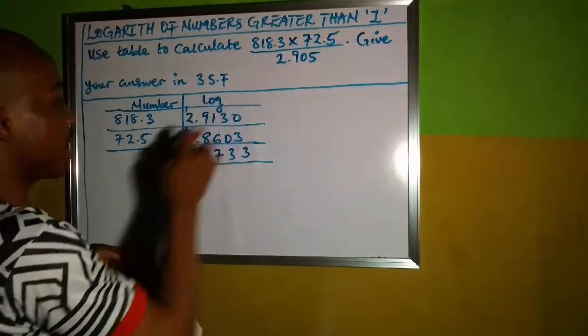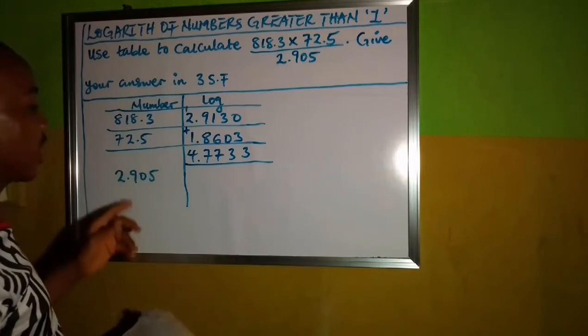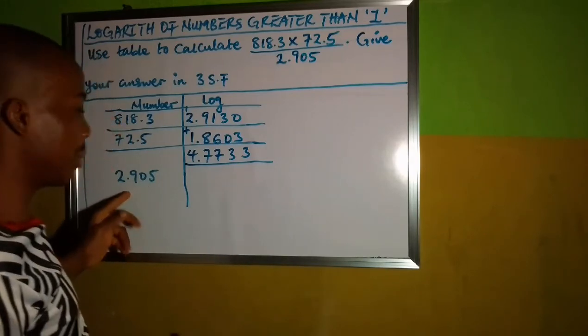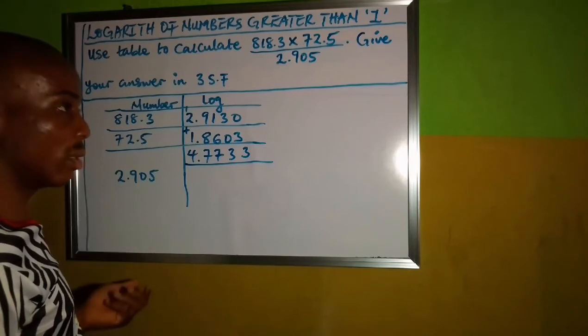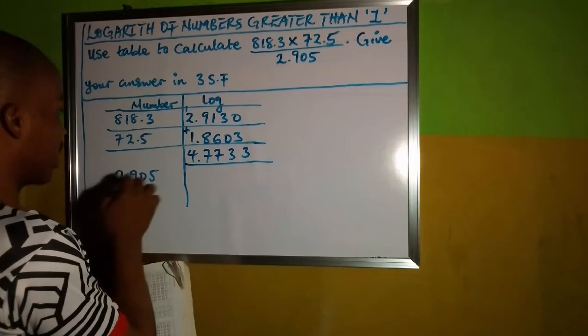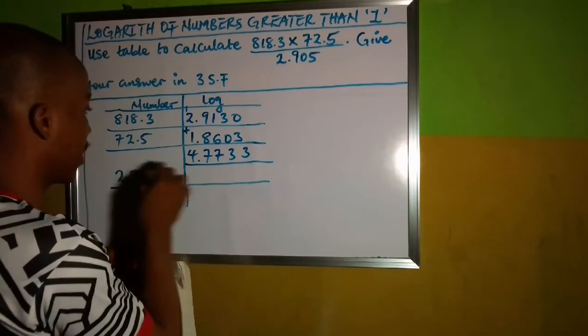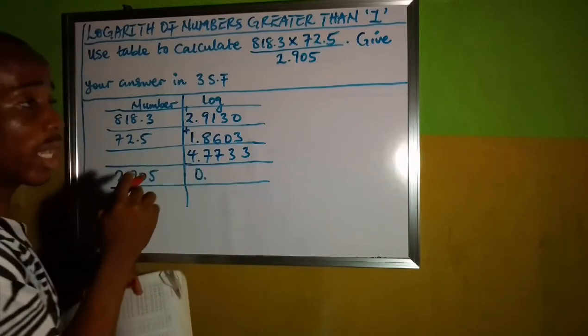We are not done yet. The denominator here is 2.905. So what we are going to do next is, there is no point expressing in standard form. So that means that the power here will be 0. So I am going to start off with 0 because the power is 0.